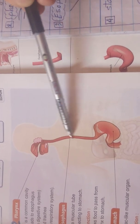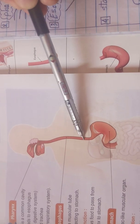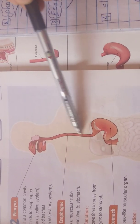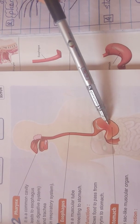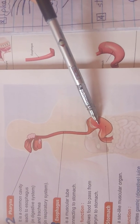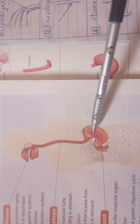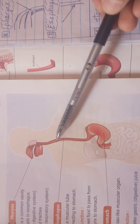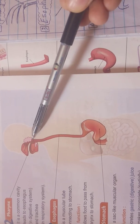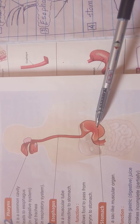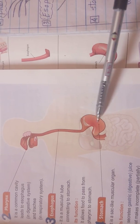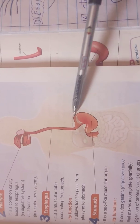Now we go to the esophagus. The esophagus is a muscular tube that leads to the stomach. What is the function of the esophagus? It allows food to pass from the pharynx to the stomach.